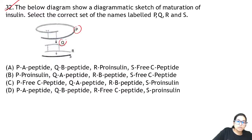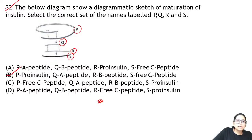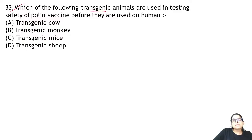Zoology Question 32: what is P, Q, R, S in the diagram? P is pro-insulin — it is immature. Then it is processed: A chain and B chain are kept, and C peptide is removed. The A and B chains are connected by disulfide bridges.